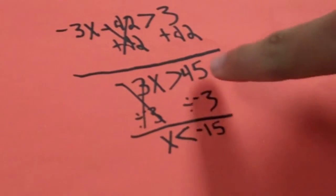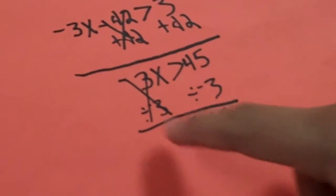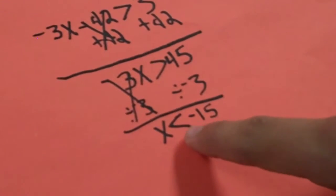And then on the other side, it equals 45. Then rewrote the problem. And then I divided it on both sides. And then when you divide it, the symbol changes.